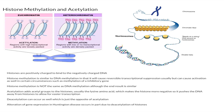Now let's talk about acetylation. Acetylation adds acetyl groups to the histones, usually to lysine in the histone. Histones are made up of proteins, and the proteins that make up histones are usually positively charged — one of these positively charged amino acids is lysine. By adding acetyl groups, you make the histone more negative, which pushes the DNA away from the histones so they aren't grabbing the DNA as tightly, allowing for easier transcription.